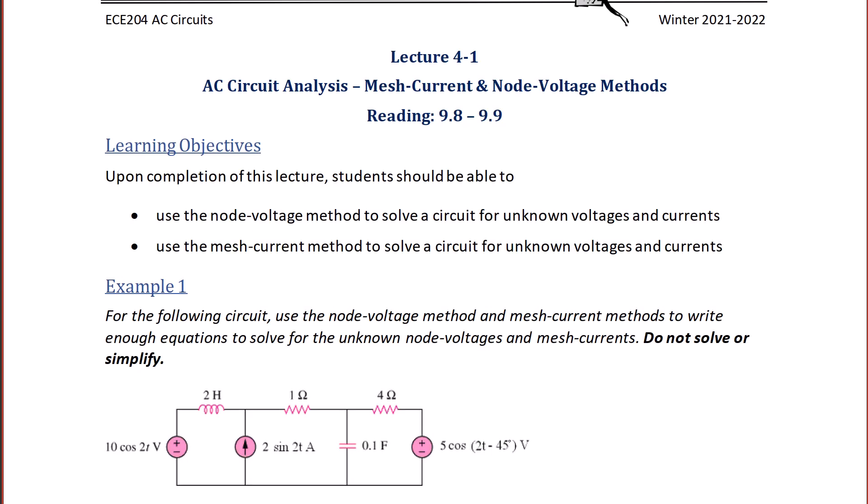Lecture 4-1: AC Circuit Analysis — Mesh Current and Node Voltage Methods. Our learning objectives are that upon completion of this lecture, students should be able to use the node voltage method and mesh current method to solve a circuit for unknown voltages and currents, given a circuit in sinusoidal steady state in the time domain or frequency domain, and be able to convert it from the time domain to the frequency domain.